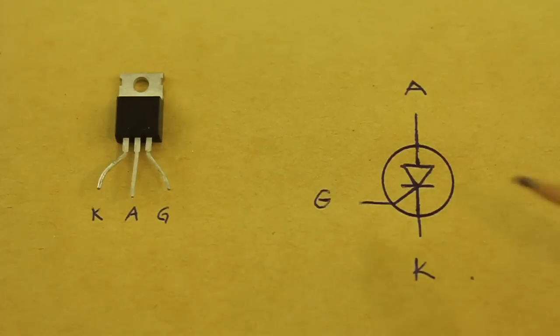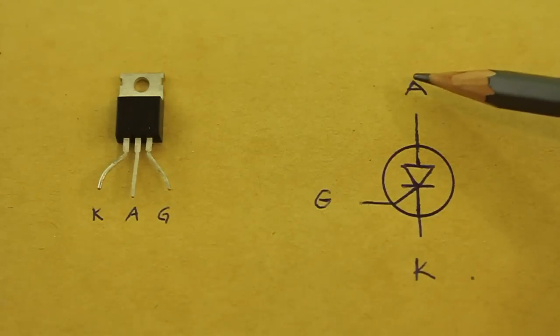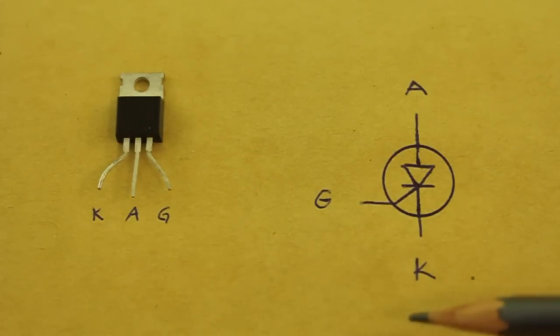In order for the thyristor to turn on, we must inject a small pulse of current into the gate. Then the thyristor turns on and the current can flow from anode to cathode, even if there is no longer a current on the gate.